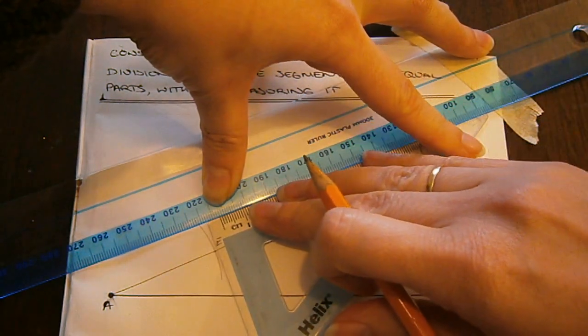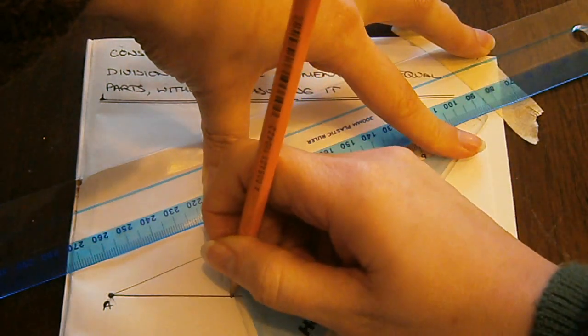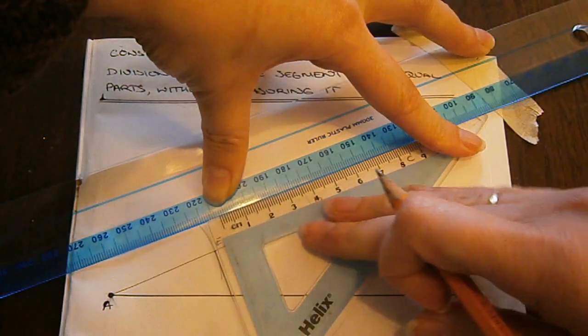I slide it along again to the point E, and I draw another line through E, also parallel to CB.